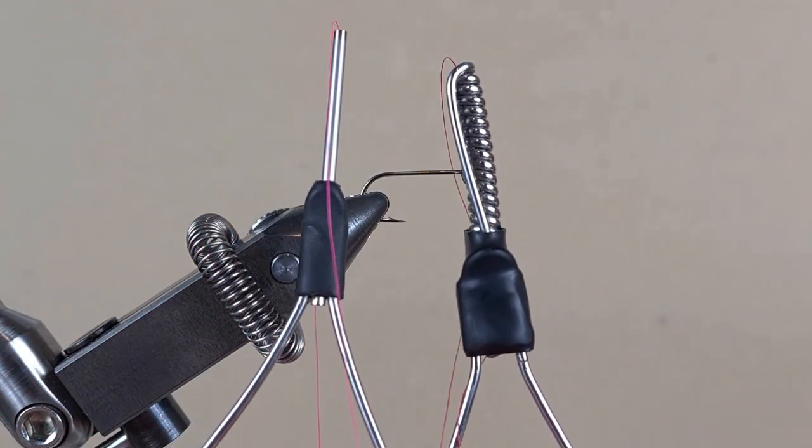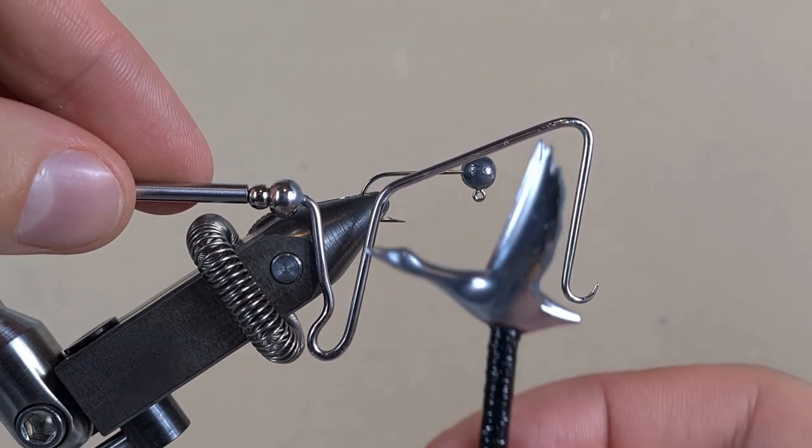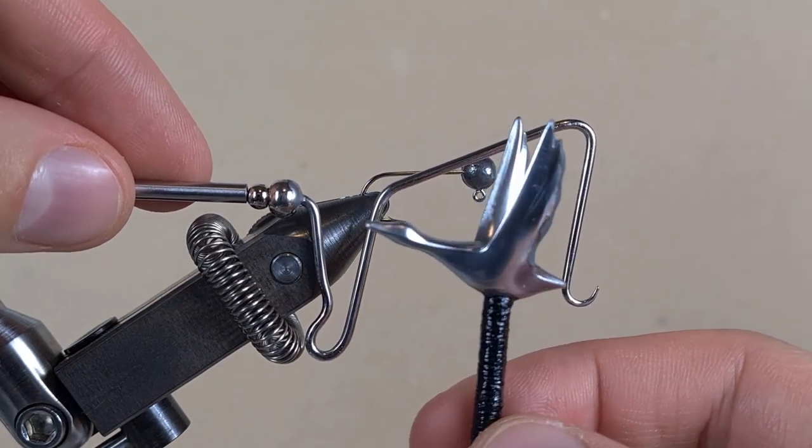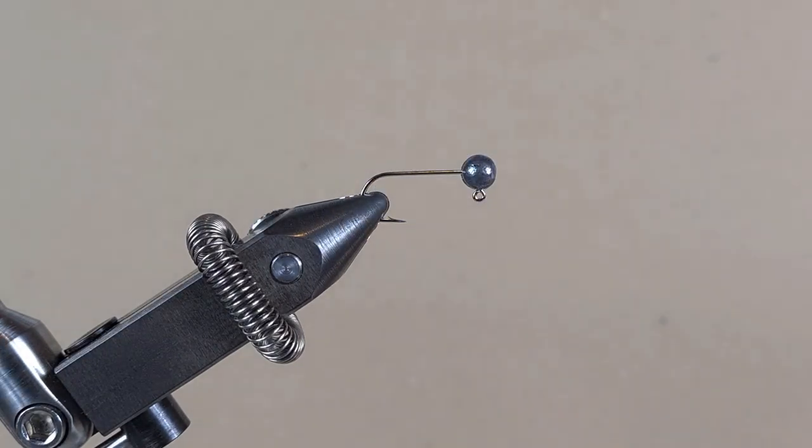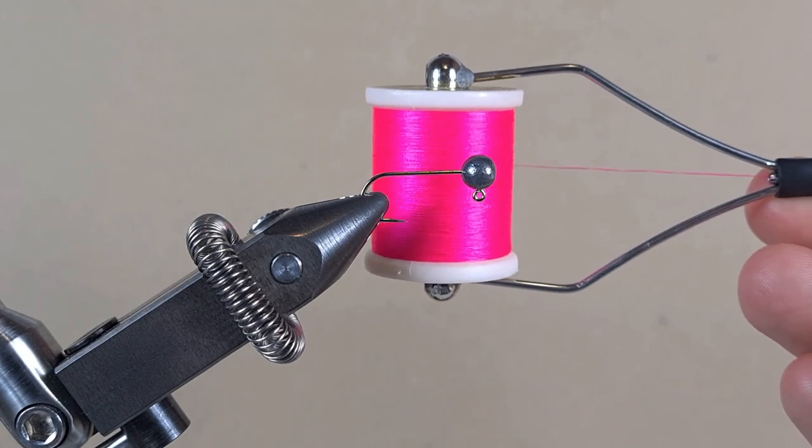If you want to know how to make this bobbin holder, or this whip finisher or bodkin, I'll leave the link in the description. I'm going to use bright pink thread in 6 odd.